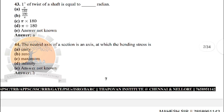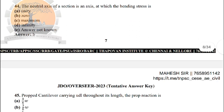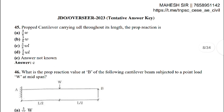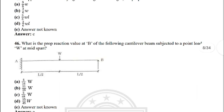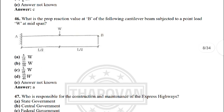Next: the neutral axis of a section is an axis at which the bending stress is — the correct answer is option B: zero. Next: for a propped cantilever carrying UDL throughout the length, the prop reaction is — option C: (3/8) × w × l.